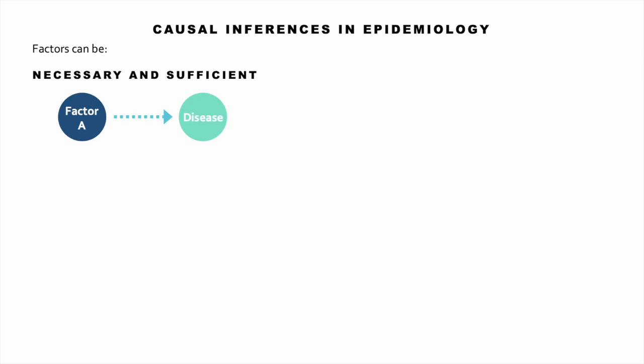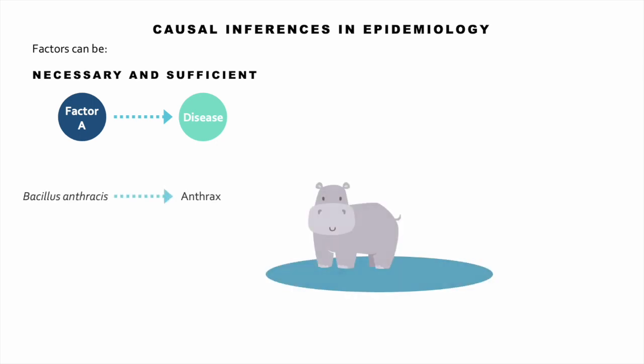Factors can be necessary and sufficient. Anthrax is a suitable example. The causative bacteria, Bacillus anthracis, is naturally found in soil, plants, and water in some endemic places. It's a gram-positive rod that can form endospores, allowing it to remain inactive for many years, and when environmental conditions become favorable, it can infect an animal that ingests contaminated soil, plants, or water. Bacillus anthracis was the first bacteria to be experimentally shown to be pathogenic by Robert Koch.